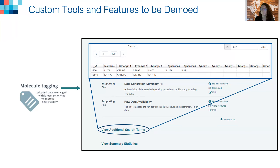We also have the molecule tagging tool, where data that are uploaded are tagged with known synonyms, to increase findability on the site. The way this works is that if a gene has a known set of synonyms, we tag that on the backend, and that enables two users to come to the site with different terms that mean the same thing and find the same set of data.